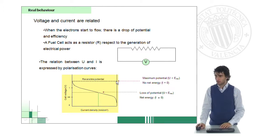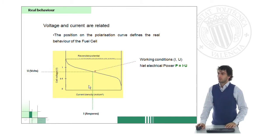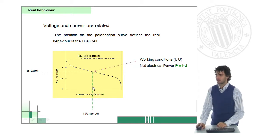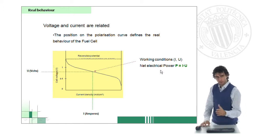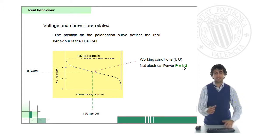This is always happening. The real potential, which will be the one reading this table for a certain current density, will always be less than the reversible potential, which is the maximum efficiency potential. Polarization curves are the tools that we have to know where we are in terms of efficiency. These are the working conditions, and the net electrical power is the product between intensity and the voltage.